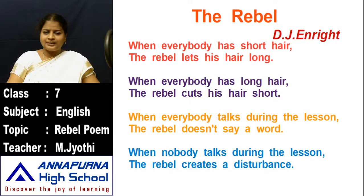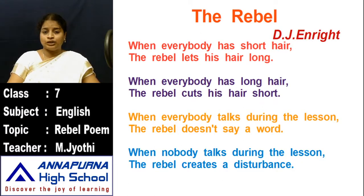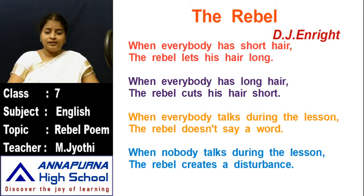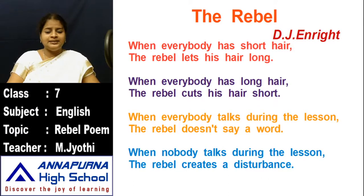When everybody has short hair, the rebel lets his hair long. When everybody has long hair, the rebel cuts his hair short. When everybody talks during the lesson, the rebel doesn't say a word. When nobody talks during the lesson, the rebel creates a disturbance.